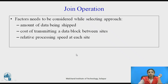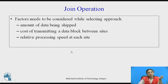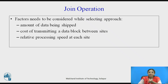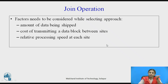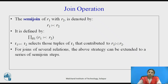When performing join operations we need to consider factors like the amount of data being shipped, the cost of transmitting data between sites, and the relative processing speed at each site. If the particular relation is small, the amount of data shipped is very less and transmission cost is low. But if the relation is too large, it will be more expensive — and hence we go for the semi-join strategy.